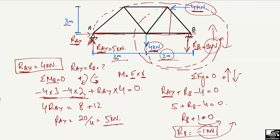The negative sign confirms that our assumed upward direction for RB was wrong, so we change the direction — RB actually acts downward with a magnitude of 1 kilonewton. This is the basic principle for finding support reactions for any truss element. Don't forget to subscribe to our channel for more engineering videos. Thank you for watching.